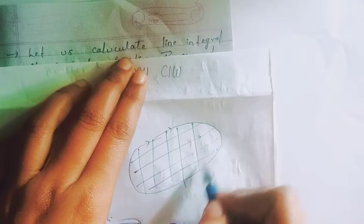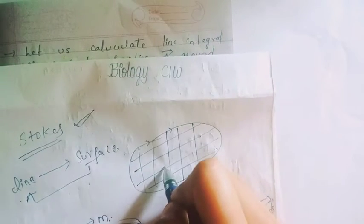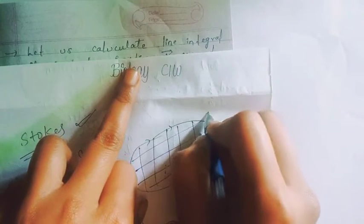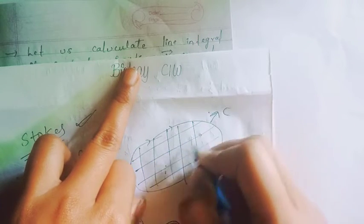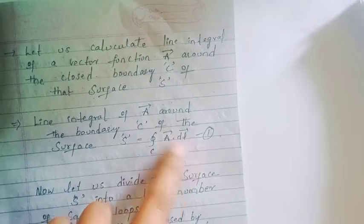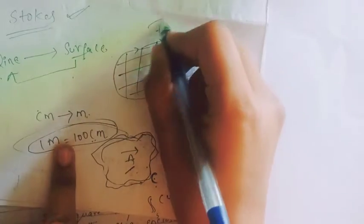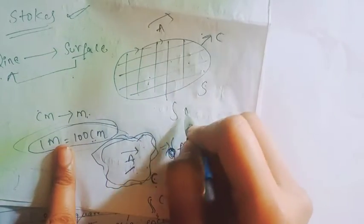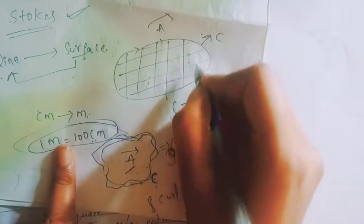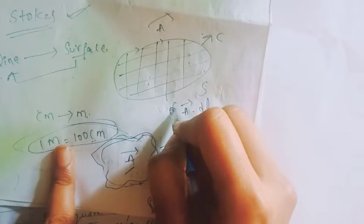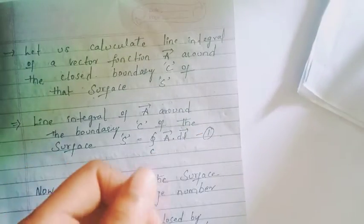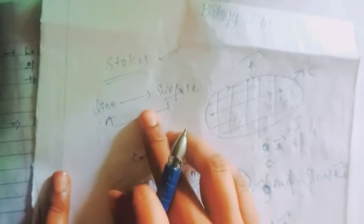We have to consider the shape of the closed boundary in this region. This is C and surface S. The line integral of A around the boundary C of the surface S is equal to the integral of A · dL along the closed curve C. The next step is that Stokes Theorem is mainly dependent upon the line integral and the surface integral.